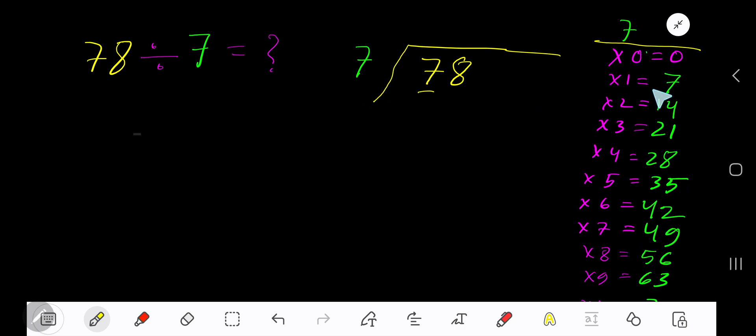7 goes into 7 how many times? 1 time. 1 times 7 gives you 7. Subtract: 0. Bring down the next digit, 8.